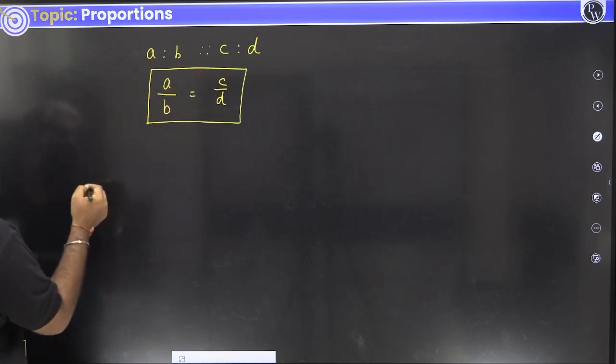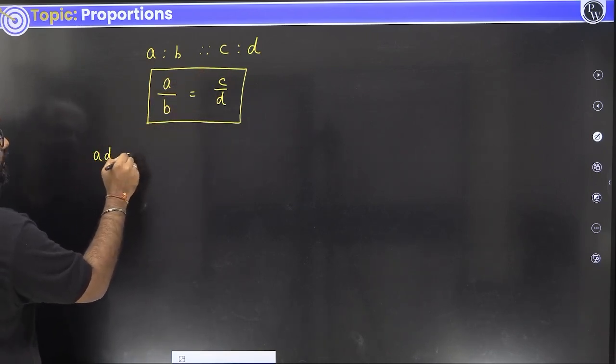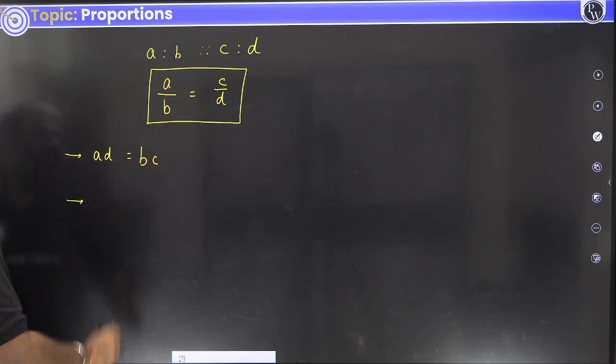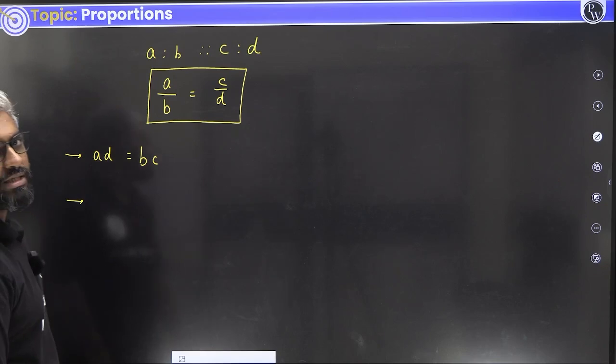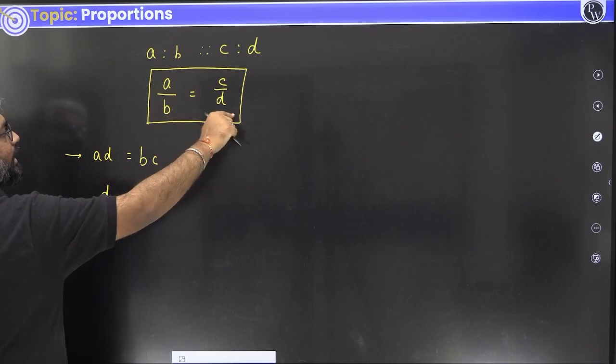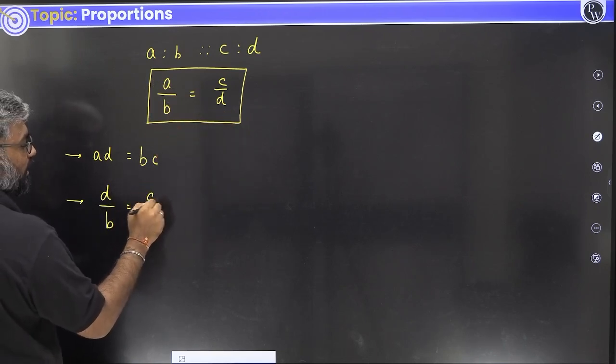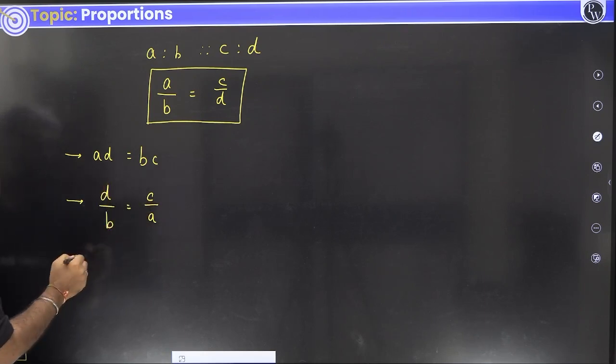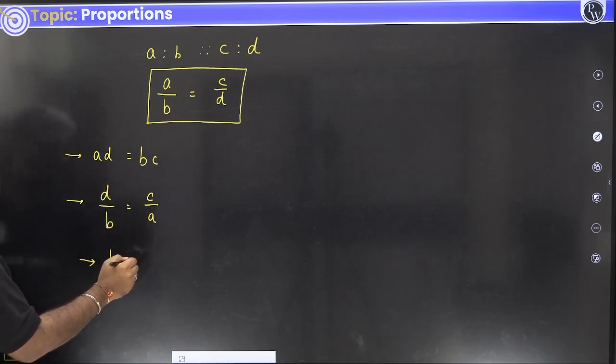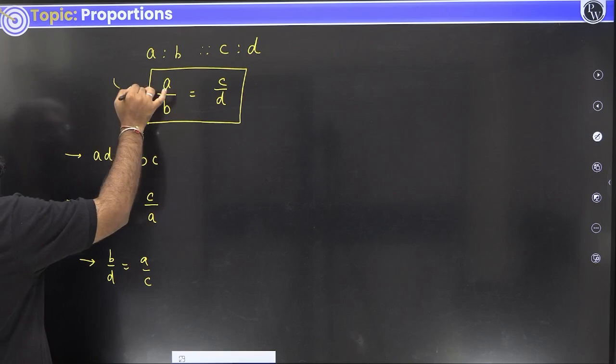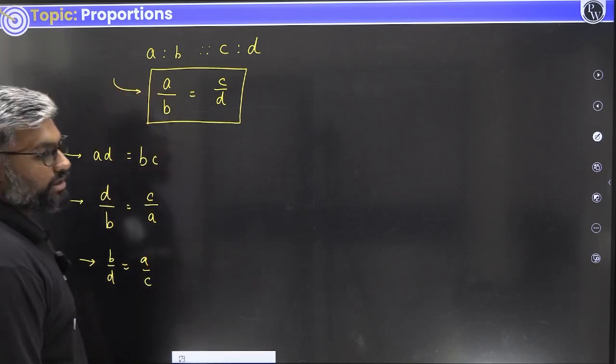You can cross multiply first and say that A times D will be equal to B times C. You can swap these places, you can change around these and say that D by B, so I am taking the D to that side and A down here, so D by B will be equal to C by A. Once you know this, you can play around with this. You can say that B by D will be equal to A by C. You can play around with this however you want to. So ultimately the fact is that these two ratios are equal.